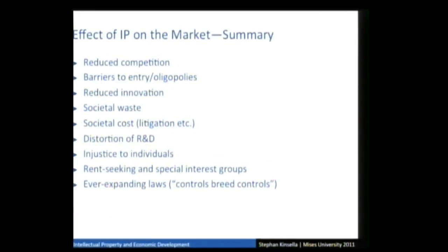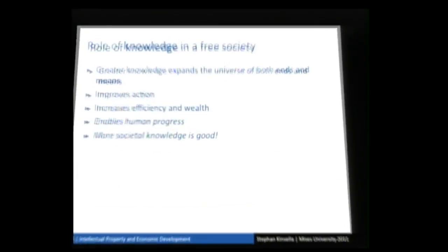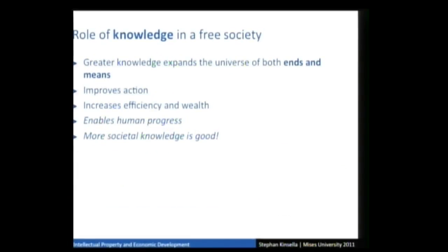These are the effects — the economic analysis of state IP. It reduces competition, raises barriers to entry, creates oligopolies, reduces innovation, creates societal waste and cost, distorts R&D, does injustice to individuals, and causes rent-seeking and ever-expanding laws. Now let's switch to free market IP or knowledge. The role of knowledge in a free society, as we talked about already, is that greater knowledge expands the universe of ends and means. It improves action, increases efficiency and wealth, enables human progress. More societal knowledge is good — this is what allows human progress over time.